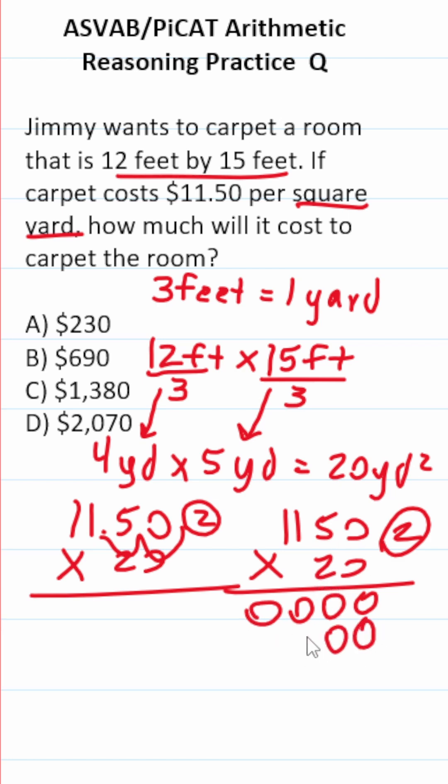2 times 0 is 0. 5 times 2 is 10, so bring down a 0, carry the 1. 2 times 1 is 2, plus 1 is 3, and 2 times 1 is 2.